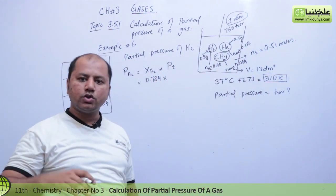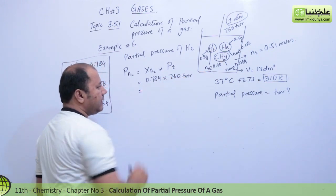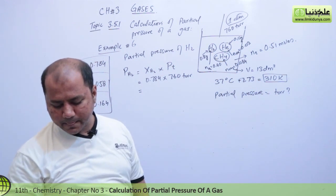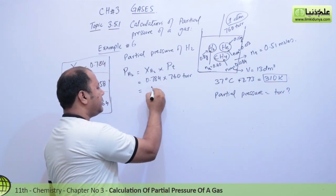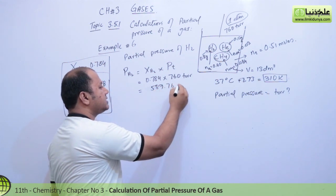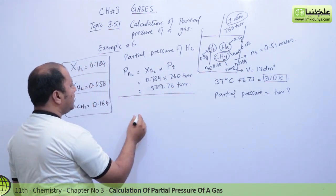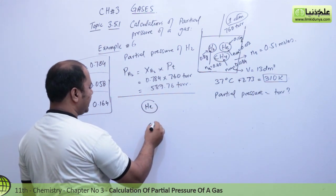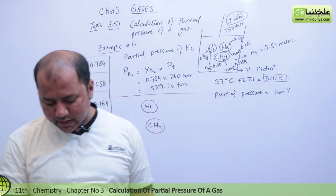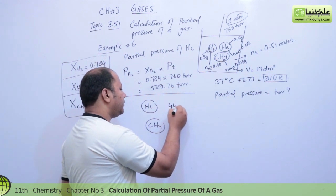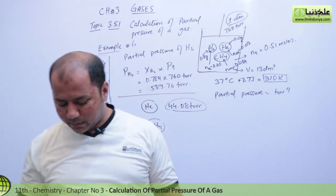If you convert 1.80 atm to torr, you get 760 torr (since the problem uses 1 atm = 760 torr here). So PP(H₂) = 0.784 × 760 = 589.76 torr. Similarly, for helium: PP(He) = 0.058 × 760 = 44.08 torr.